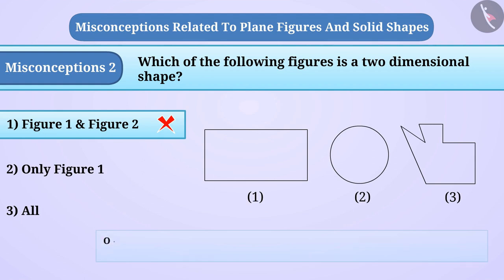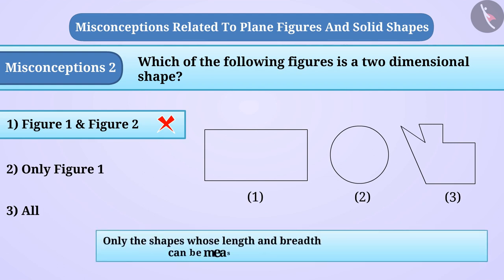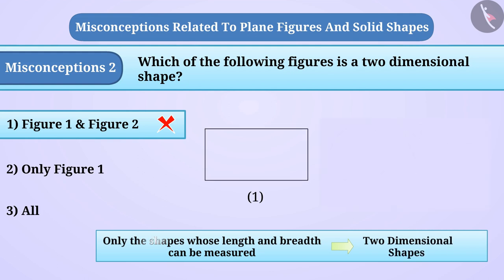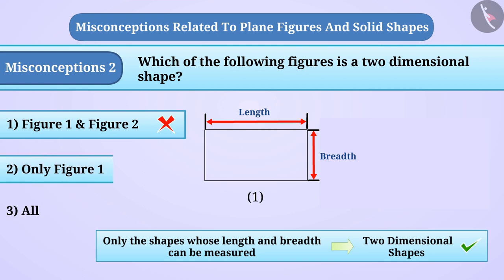Some children think that only the shapes whose length and breadth can be measured are two-dimensional shapes. They think that only the rectangle's length and breadth can be measured, so they understand that only figure 1 is a two-dimensional shape. With this misconception, they answer option 2, but this is also the wrong answer.